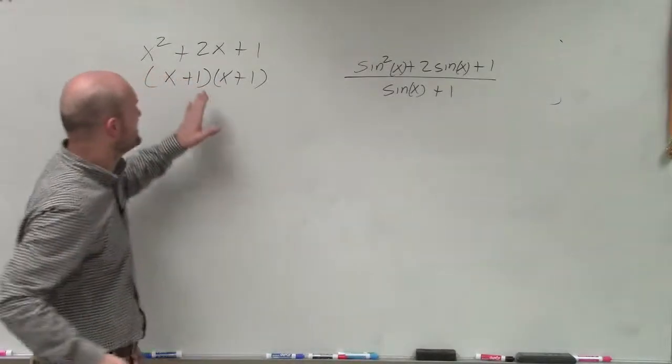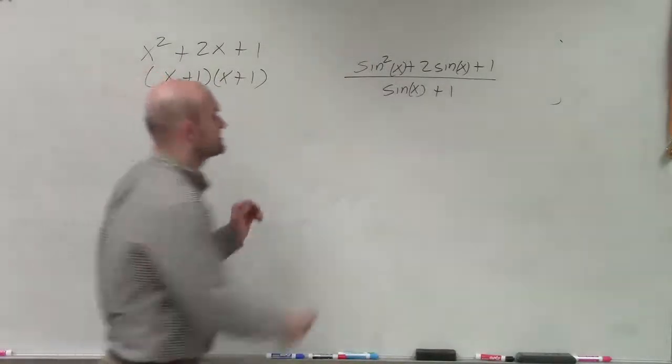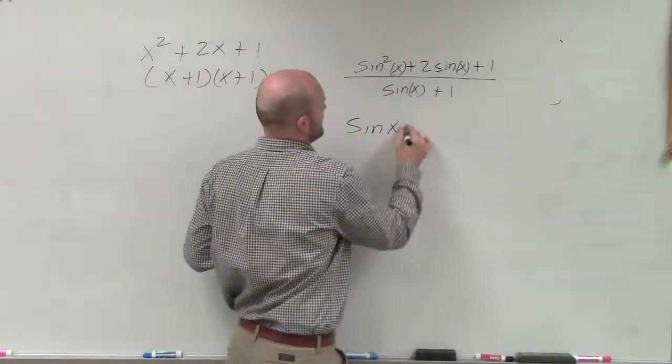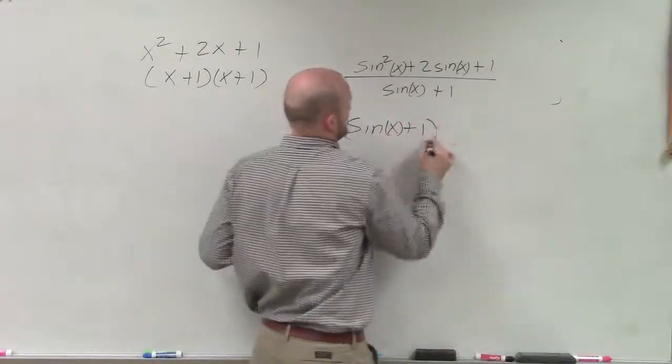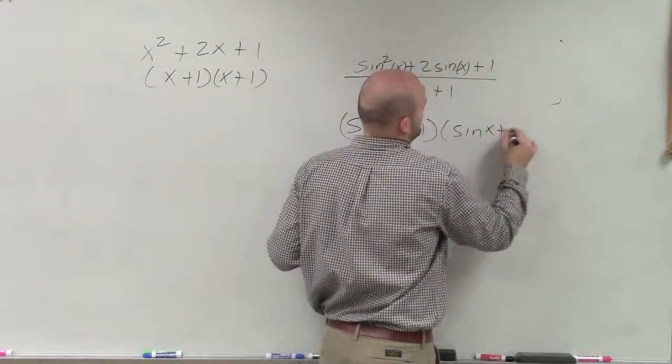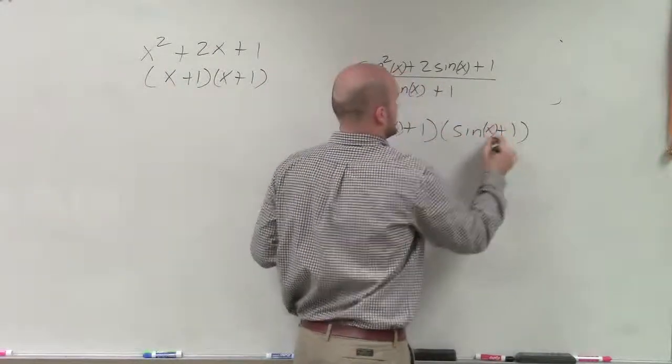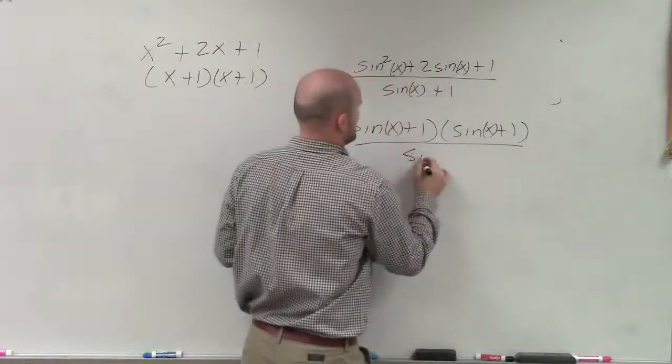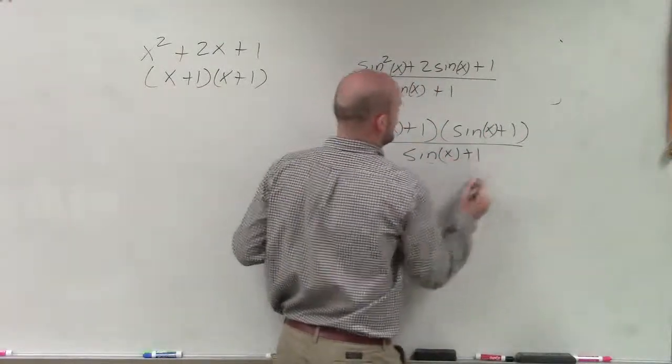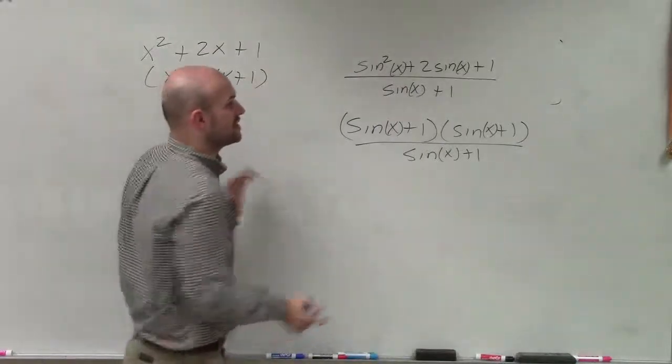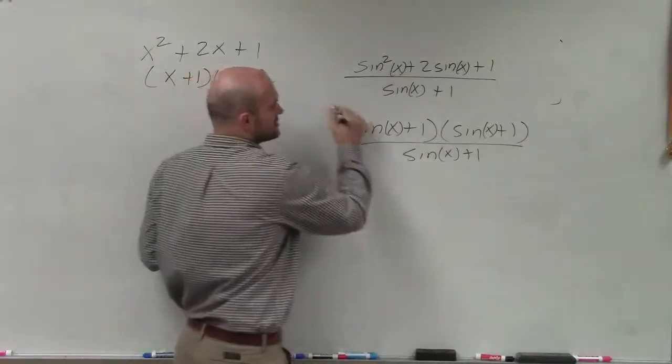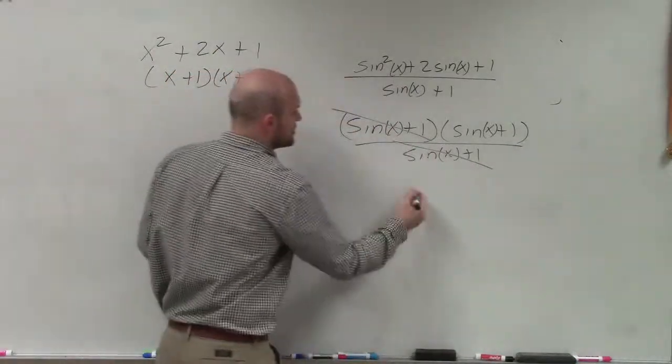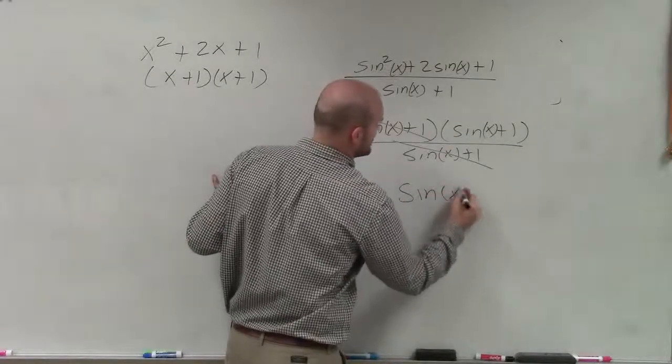But now, rather than just using x, I'm going to use sine of x. So therefore, I have this as sine of x plus 1 times sine of x plus 1, all divided by sine of x plus 1. Therefore, you can see that these are now similar terms. So now I can just divide out those two terms, and my final solution is just going to be sine of x plus 1.